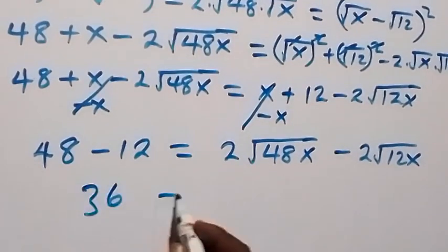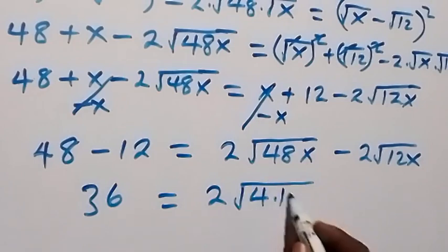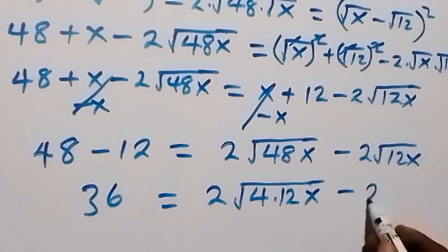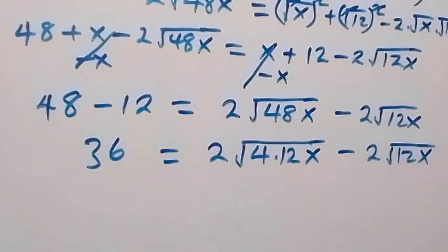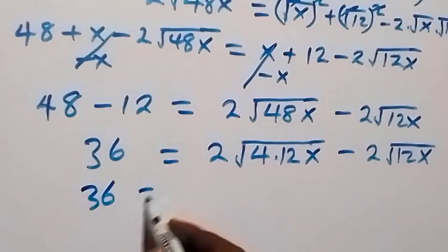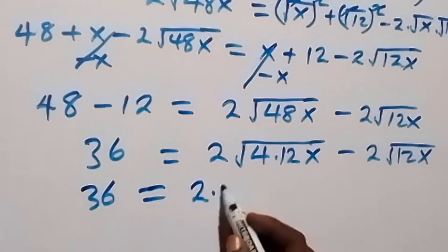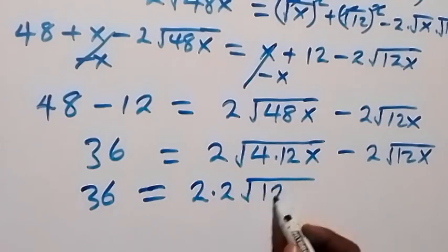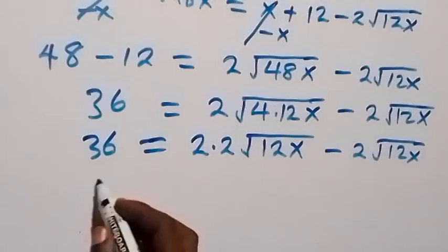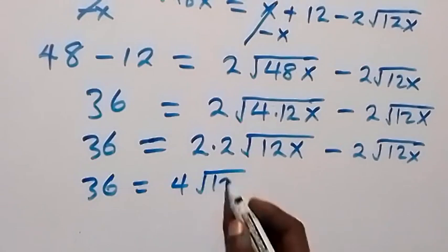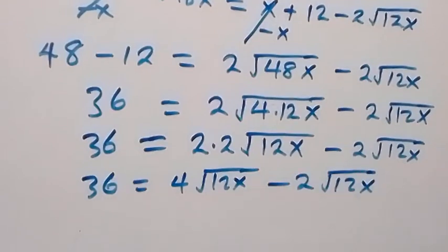So 48 minus 12 equals 36. We have 36 equals 2 times square root of 48x minus 2 root 12x. We can write root 48 as root of 4 times 12, and root 4 is 2, so this becomes 2 times 2 times root 12x, which is 4 root 12x, minus 2 root 12x.